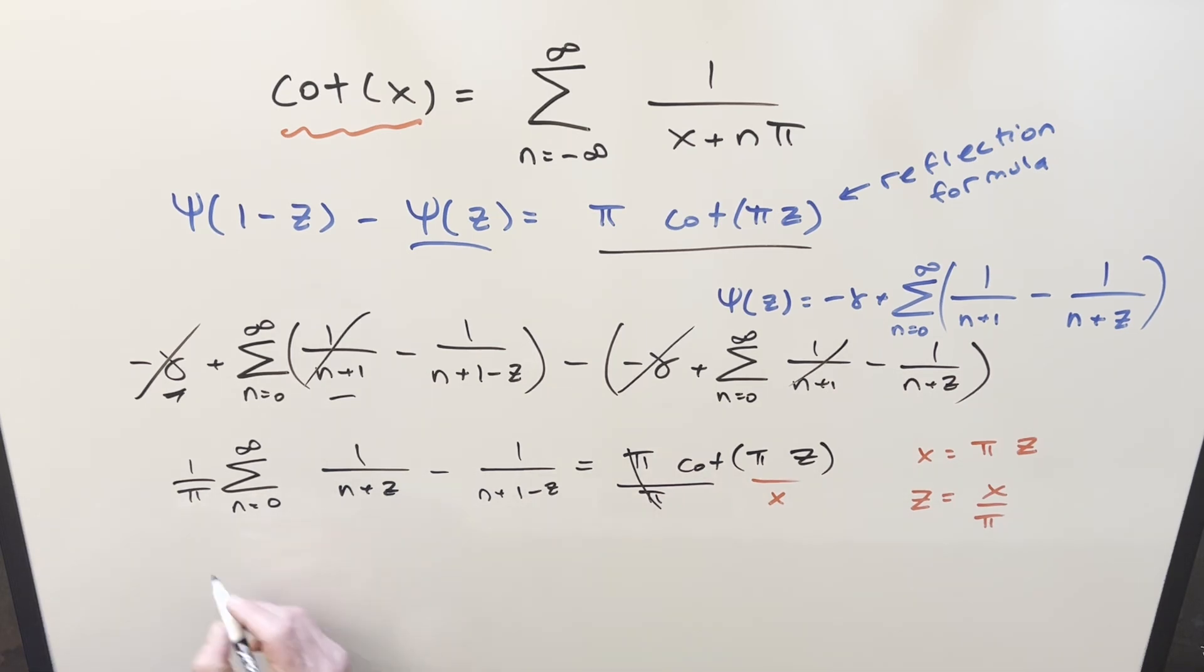So now we have our cotangent of x on the left side, like this. Then we'll have 1 over pi. Then let's substitute in for z. We're going to have 1 over n plus x over pi. And then on this other one, this thing's going to become 1 over n plus 1 minus x over pi.